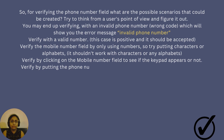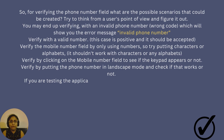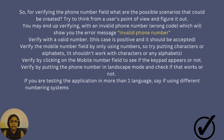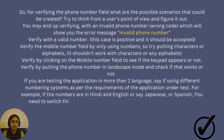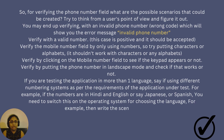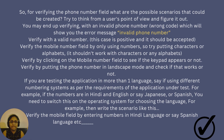Then verify by clicking on the mobile number field to see if the keypad appears or not. Verify by putting the phone number in landscape mode and check if that works or not. If you are testing the application in more than one language — say using different numbering systems as per the requirement, for example numbers in Hindi and English, or Japanese or Spanish — you need to switch this on the operating system for choosing the language. Then write the scenario like: 'Verify the mobile field by entering numbers in Hindi language or Spanish language, and it should be accepted.'